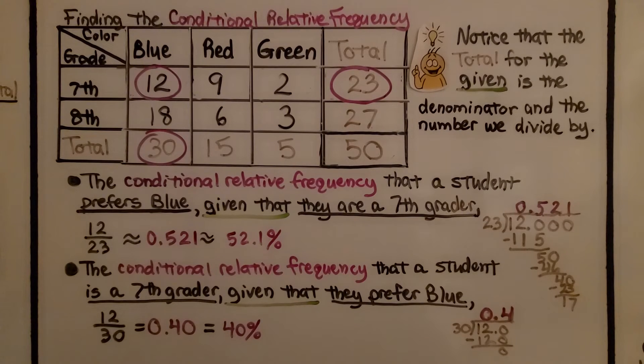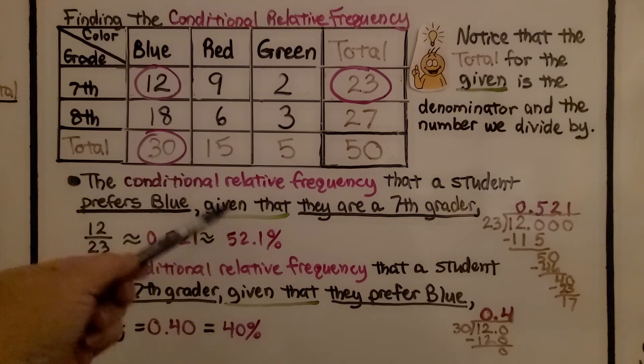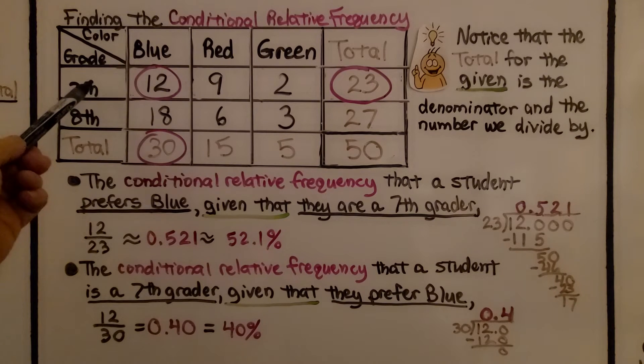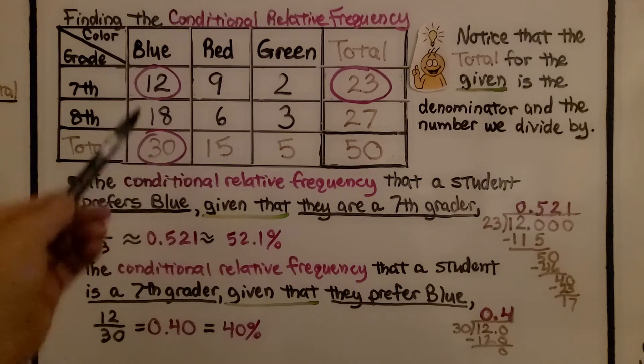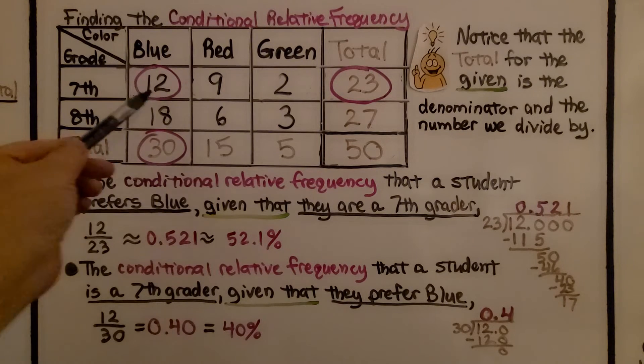For finding the conditional relative frequency, let's say we want the conditional relative frequency that a student prefers blue given that they are seventh grade. So we have blue first, then seventh grade.